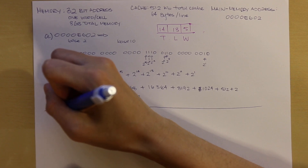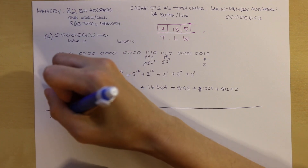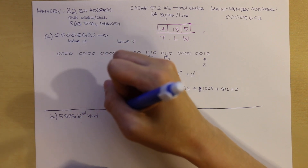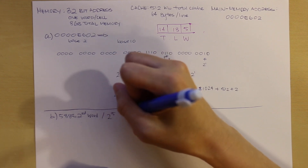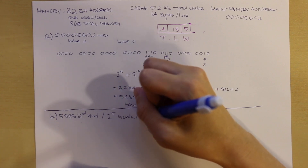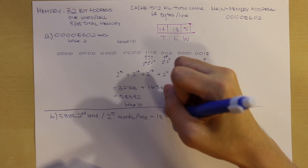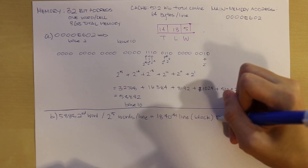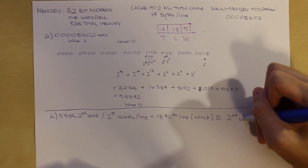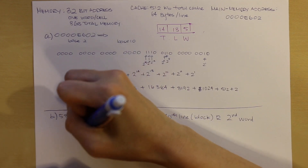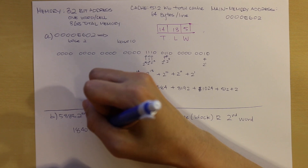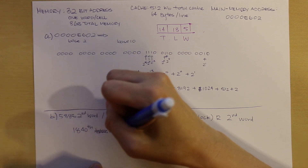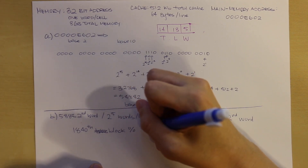The next question is: what line is that cell in? We divide the word by the words per line. We take our 58,882nd word and divide by the words per line, which gives us the 1,840th block with a remainder of 2 — meaning it is our second word. Taking the 1,840th block mod 2^13 lines per cache gives us the 1,840th line.